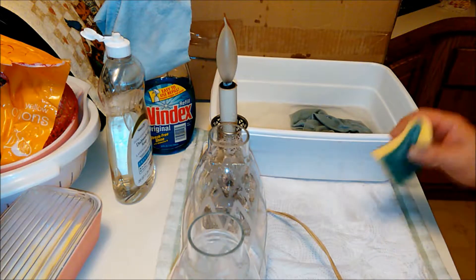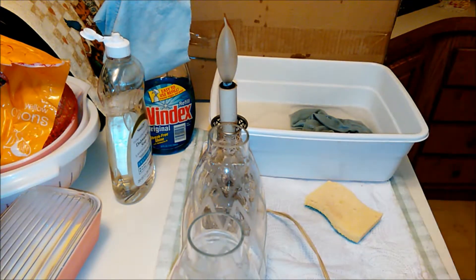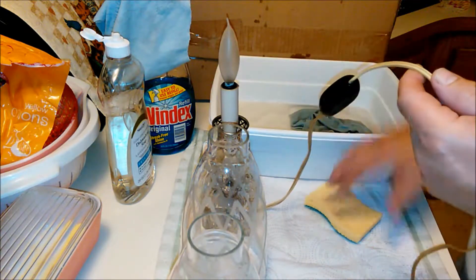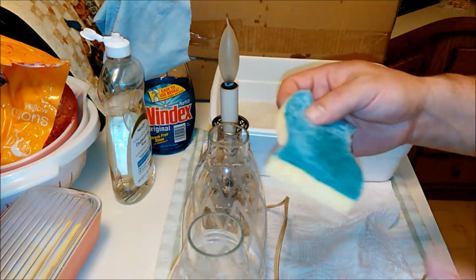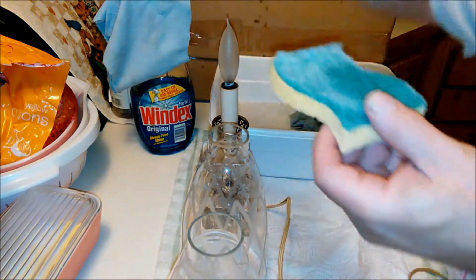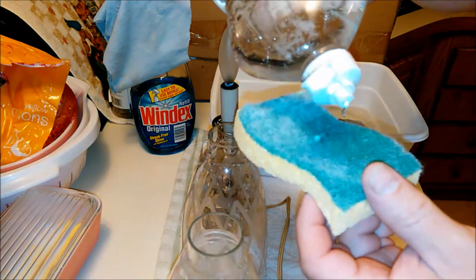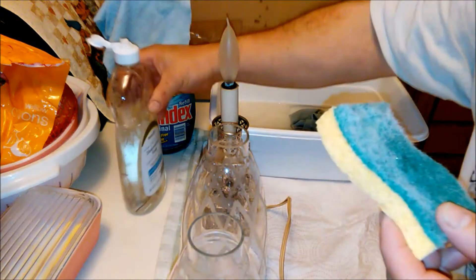Now instead of doing the other one, what I do if I've got a cord that needs to be cleaned up, I'll take a sponge that's just a little bit damp. And I'll just put a couple drops of dishwashing liquid on it.